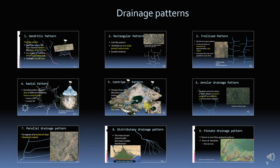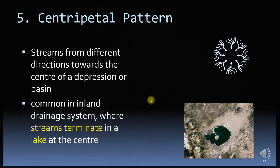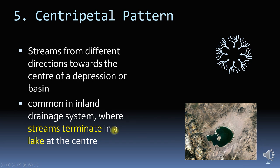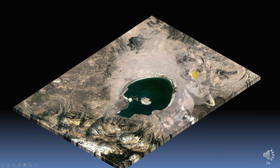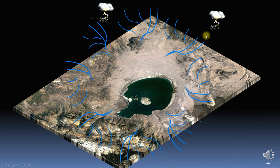The flow direction in the fifth pattern, the centripetal pattern, is the reverse of the radial pattern. Here, streams from different directions flow towards the center. This is common in inland water sources where streams terminate, for example, a lake.